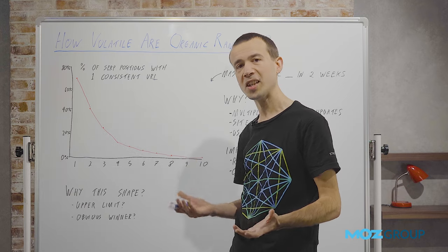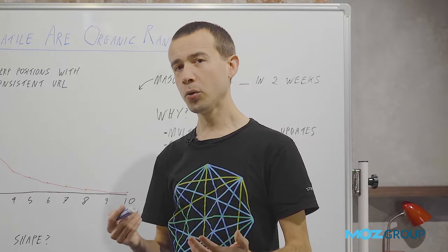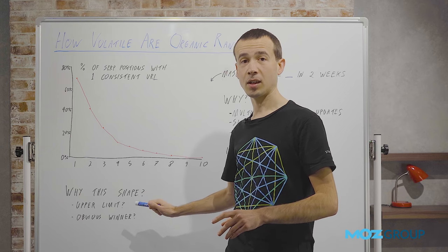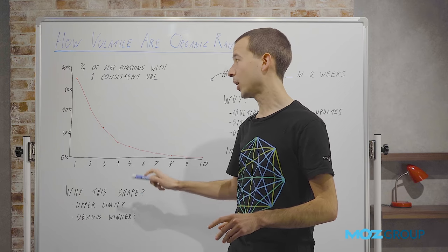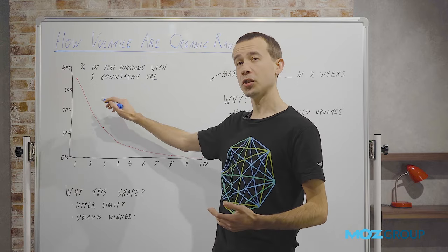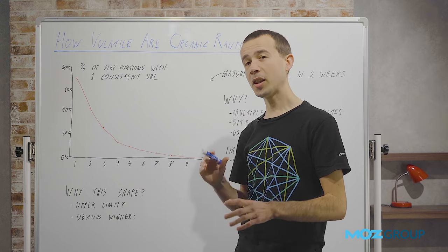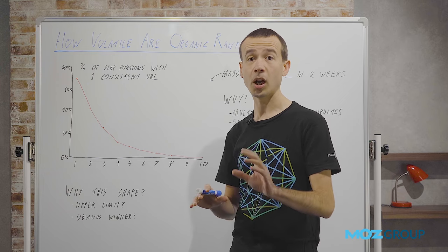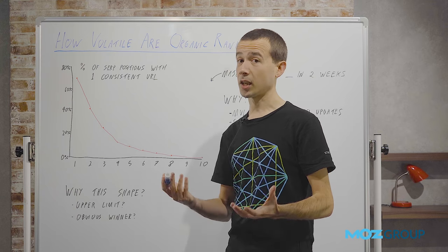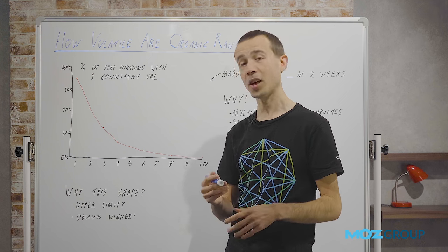I've got two pet theories as to why this might be. One, the more obvious one, is simply that if you're in position one, you can only move in one direction and you can only move so much. Even if you're in position two, you can only move a little bit in one direction, right? So maybe that kind of limit is part of why the higher positions seem more stable. However, I think probably the bigger reason—and this is just a pet theory, I'd be curious if you want to pop in on Twitter and share your own ideas—